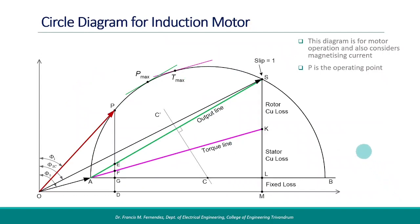What we see here is a circle diagram of an induction motor, considering the magnetizing current also. If we have to represent motor operation only, the upper half of the circle is sufficient. This video describes the procedure to construct the circle diagram and how to read the different motor parameters from it for a particular operating point.